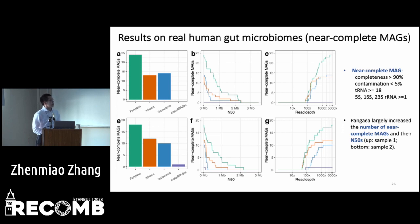We also evaluated the assemblers on real human gut microbiome data. Using near-complete MAGs as the metric, our assembler produced significantly more near-complete MAGs with higher N50 than other assemblers. Plotting the number of near-complete MAGs against read depth, our assembler significantly outperforms others for microbes with read depths higher than approximately 200x, indicating that the read-binning strategy benefits generation of near-complete MAGs for medium- and high-abundance microbes.